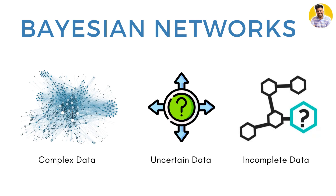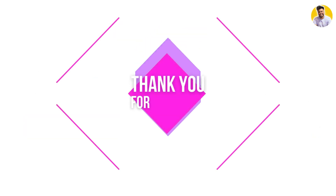Bayesian networks are especially useful in situations where we need to make decisions based on uncertain and incomplete information. They allow us to not only make predictions but also understand the reasoning behind those predictions. Whether you are a data scientist, an AI researcher, or just someone interested in machine learning, Bayesian networks are an exciting and powerful tool that can help you make sense of complex data and make informed decisions. Thanks for watching — don't forget to like, subscribe, and share for more content on AI and data science.